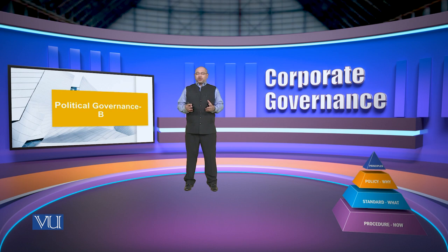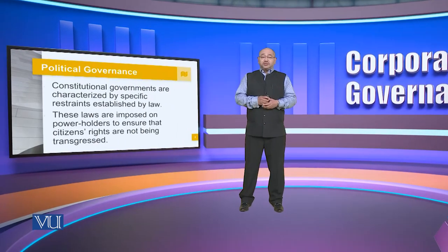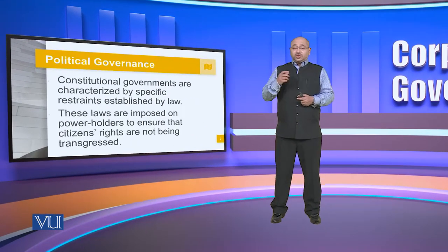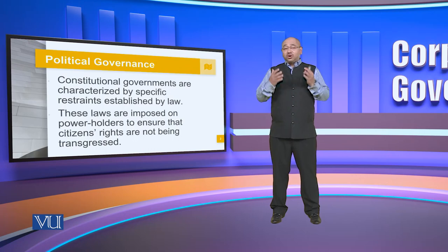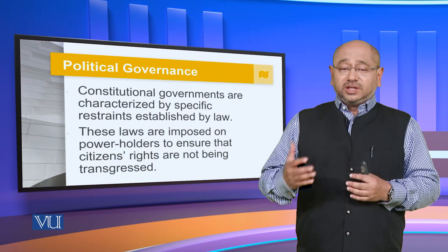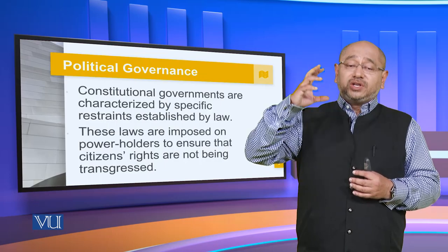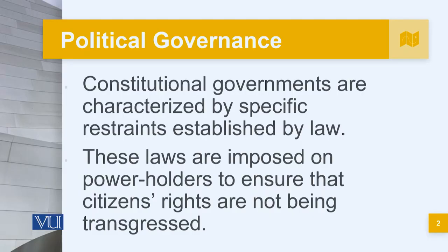In the last class we were talking about the broader aspects of political governance and how the different factors and textures tend to integrate to create a more conducive and better environment for the other sectors within a particular economy. Today we are going to move forward with political governance. Constitutional governments are characterized by special restraints established by law. These laws are imposed on power holders to ensure that citizens' rights are not being transgressed.